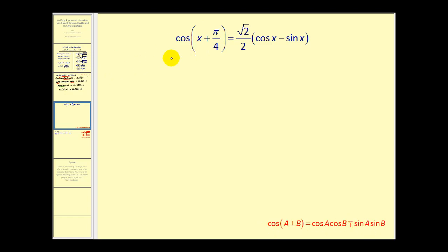So the left side can be written as the cosine of a times cosine b. So cosine of x times cosine of pi over four. Since we have a sum we'll use a difference on the left. Sine a or sine x times sine b or sine pi over four.